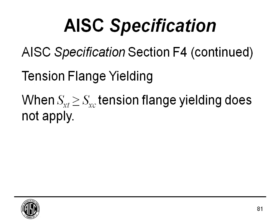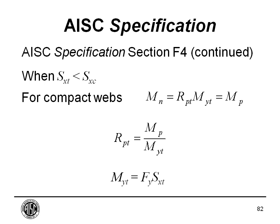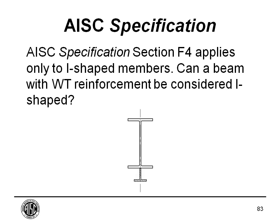We've gone quickly through lateral torsional buckling, but don't forget to check tension flange yielding. When the section modulus referenced to the tension flange is greater than that at the compression flange, you don't have to worry about it — the spec says so explicitly. But if not, here's what you need to do: after plugging in R sub PT, you end up with just the plastic moment strength. The WT reinforcement at the bottom flange is used enough that it's worth going through in detail on the next slides.